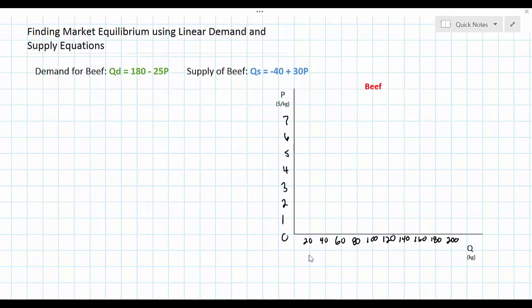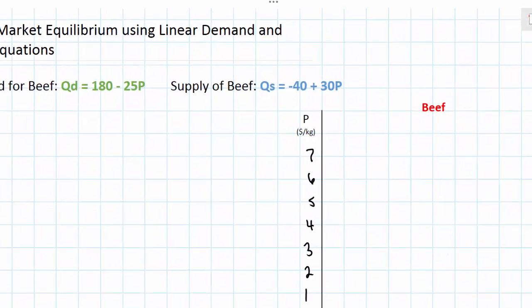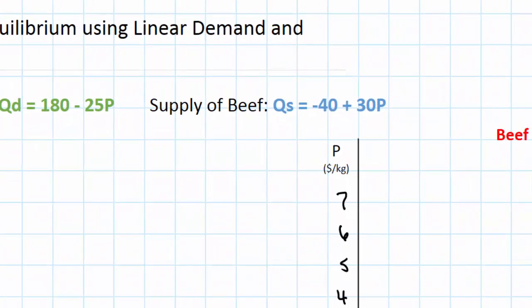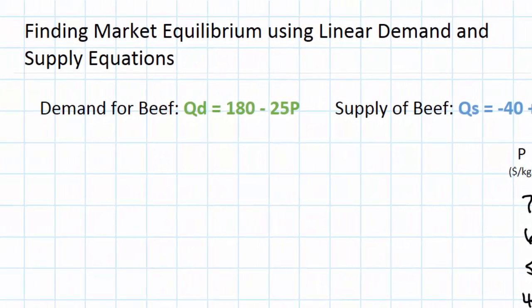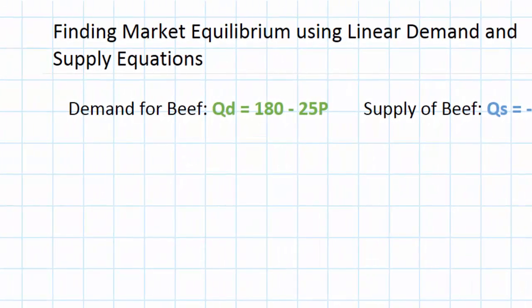We're looking at the market for beef. In a previous video we derived the supply equation for beef: quantity supplied of beef equals negative 40 plus 30 times the price. I've come up with a demand equation for beef that we can combine with the supply equation in order to determine equilibrium. The demand for beef can be represented by the equation 180 minus 25 times the price.